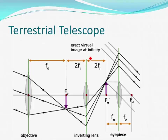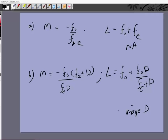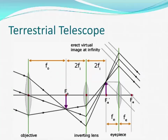In the terrestrial telescope, the object comes in, forms an image at f₀, then an inverting lens is placed such that f₀ is at a distance of 2f from it, forming a real inverted image of the same size. The eyepiece then works as usual. The magnification stays the same as the astronomical telescope but multiplied by minus one, making it positive — an erect image. The tube length becomes f₀ plus fe plus 4fi, where fi is the focal length of the inverting lens.